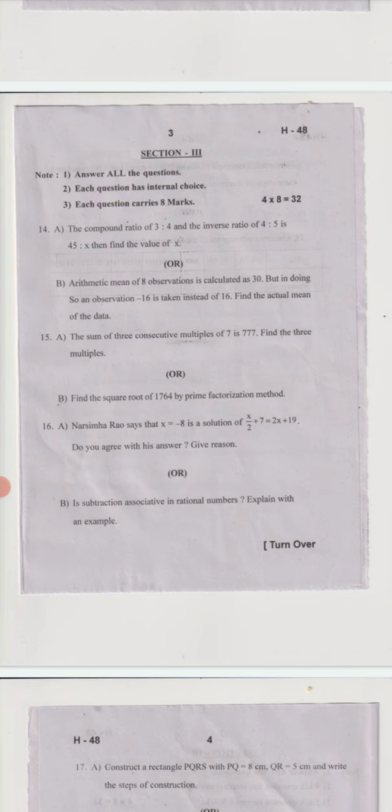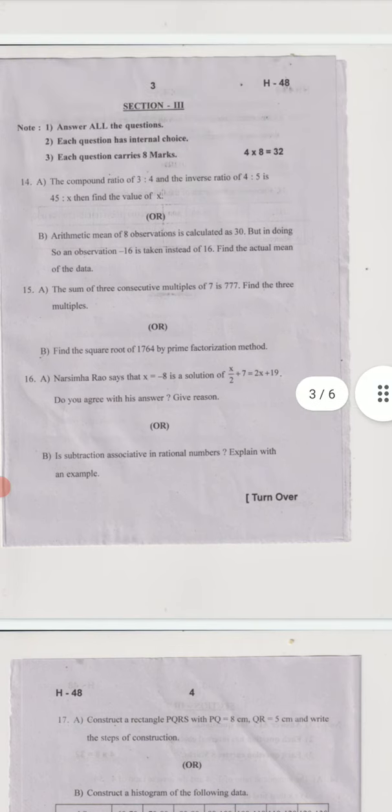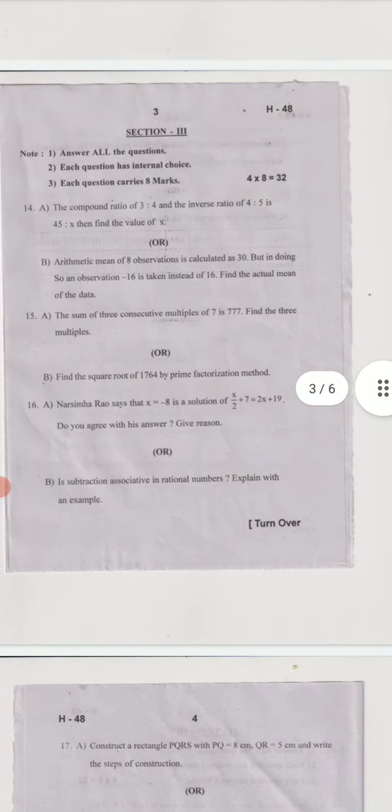In Section 3, each question has internal choice. Each question carries eight marks. If you want to write option A, you can write A. If you want to write B, you can write B. Questions 14, 15, 16, 17 each have internal marks with options A and B. We should write either A or B, any one question.